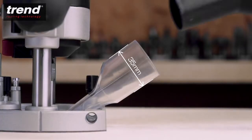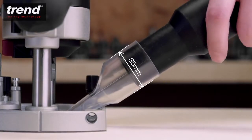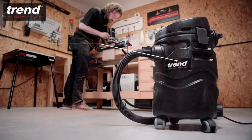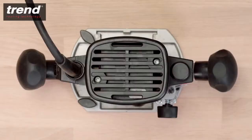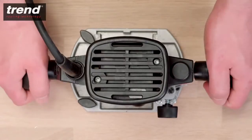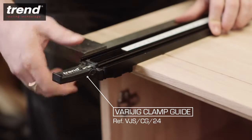The low profile transparent dust extraction spout, combined with the Trend T31 dust extractor, will maintain a clean working environment when machining. The base has two straight edges which can run smoothly along a guide.